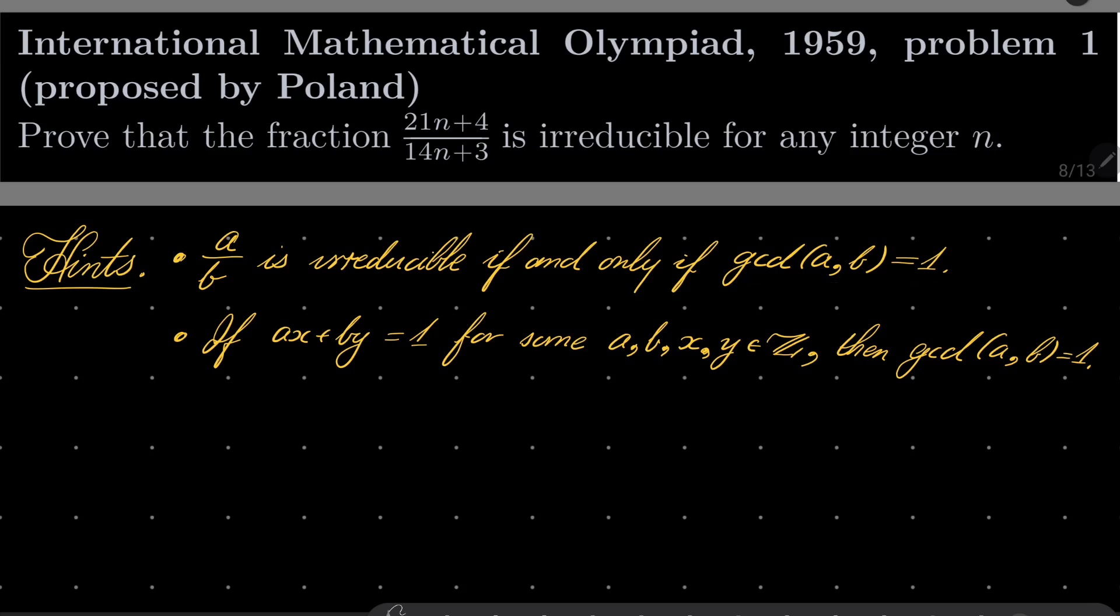And also note the following fact that if we find two numbers x and y such that ax plus by equals 1, we are talking about integers of course, then a and b must be co-prime. And that should be sufficient. So give this problem a try.